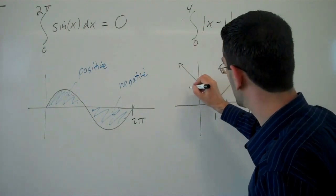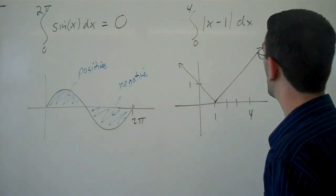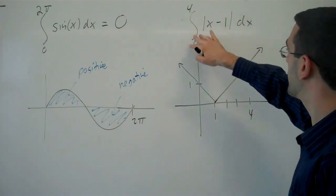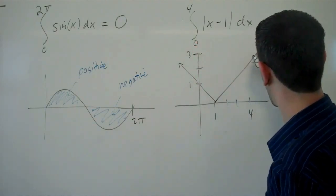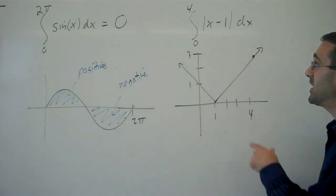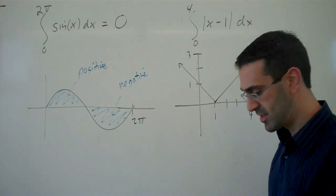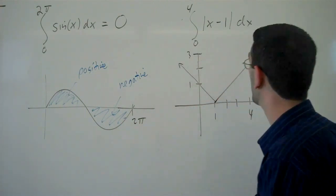And let's see here. When x is 0, y is 1. When x is 4, y would be 3. And we're trying to find the definite integral here, which would correspond from 0 to 4, which would correspond to this area.